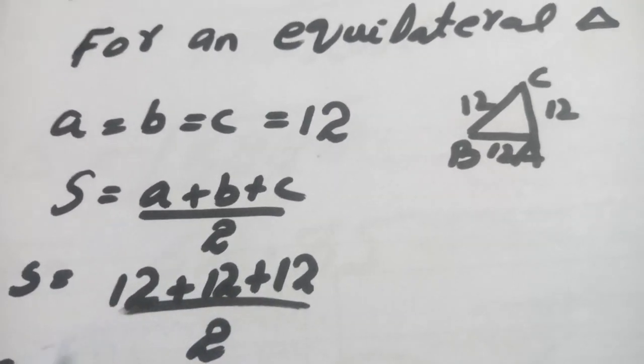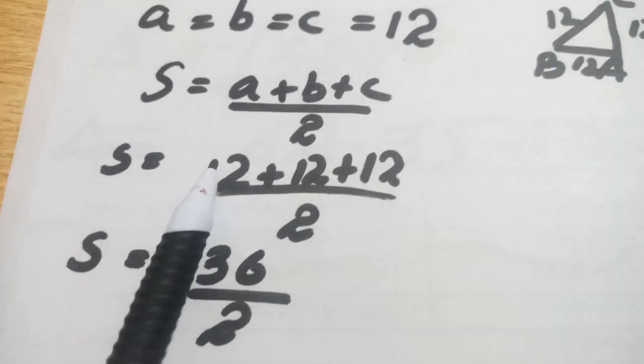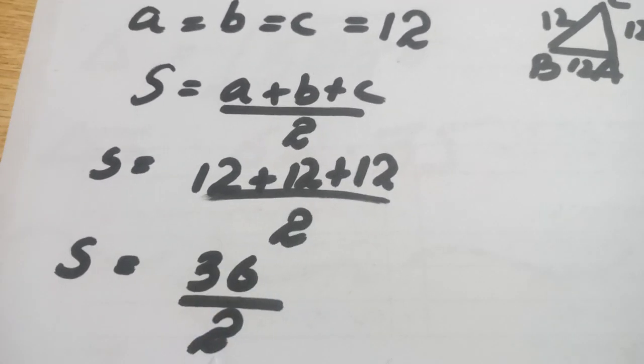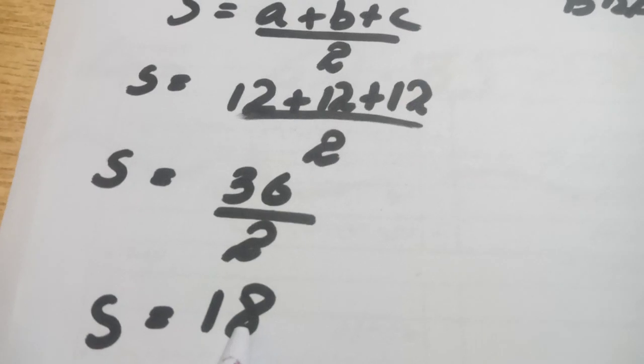s will be 36 by 2. Since all three sides are 12, we'll add 12 three times and divide by 2. So s will be 18.